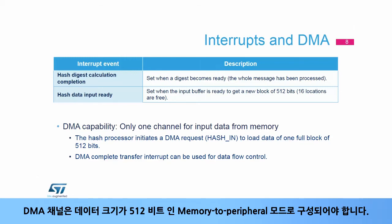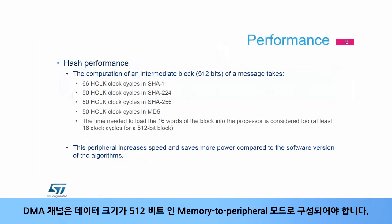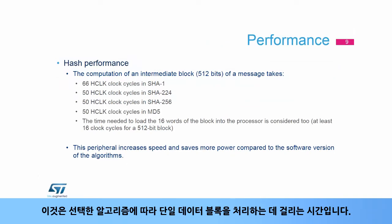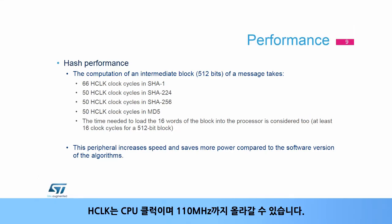The DMA channel must be configured in memory to peripheral mode with a data size equal to 512 bits. These are the times it takes to process a single block of data depending on the chosen algorithm. HCLK is the CPU clock and can go as high as 110 MHz.